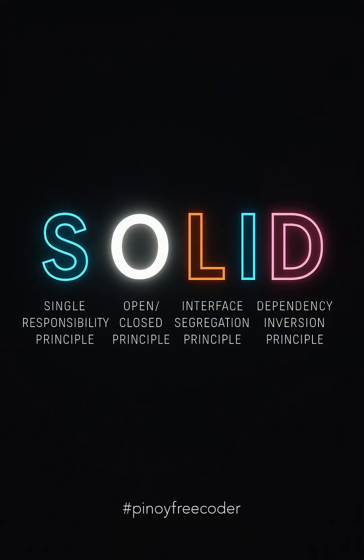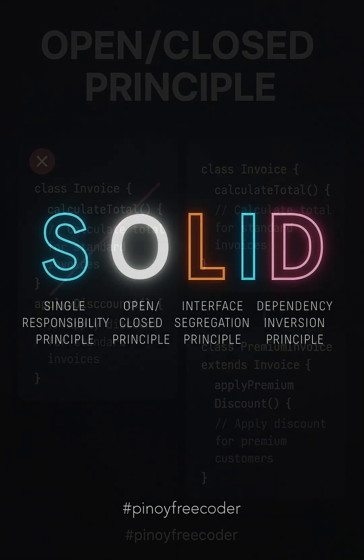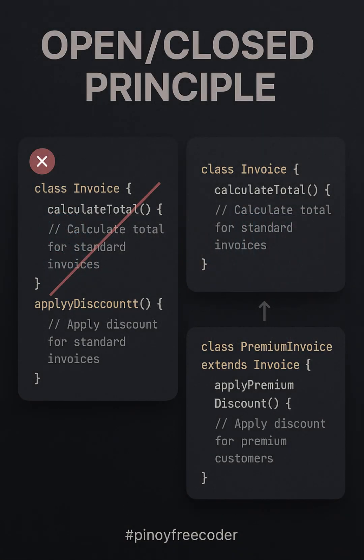Our second principle is the Open or Closed Principle, which we've highlighted here. The Open or Closed Principle, or OCP, is all about creating code that can be extended without modifying existing code. On the left, we see a class that requires changes to the original code in order to add new functionality. This makes it harder to maintain and introduces risks of breaking existing behavior.